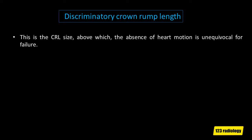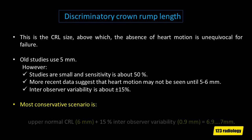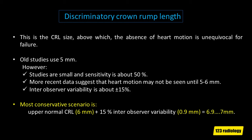Discriminatory crown rump length is the crown rump length size above which the absence of heart motion is unequivocal for failure. Old studies use 5 mm; however, these studies are small and sensitivity is about 50%. More recent data suggest that heart motion may not be seen until 5 to 6 mm, with inter-observer variability of about 15%. So the most conservative scenario is: the upper normal crown rump length is 6 mm, plus 0.9 mm for the 15% inter-observer variability, giving a sum of about 7 mm.